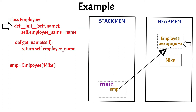Now the variable emp in the stack memory will be mapped to the employee object in the heap memory. I hope that this is clear. Now let us invoke the instance method getName and see how objects are created and mapped in the memory.